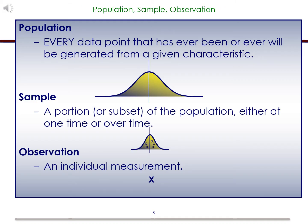Now let's review a few more definitions. A population is every data point that has ever been or ever will be generated from a given characteristic. A sample is a portion or subset of said population, either at a given time or over a period of time. And finally, an observation is an individual measurement taken from the sample and/or population.